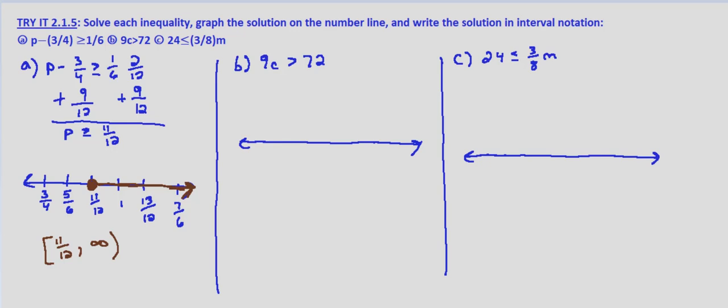All right. So 9c is greater than 72. We'll just divide both sides by 9, and we get c is greater than 8. Nice whole number. So 6, 7, 8, 9, 10, and 11.